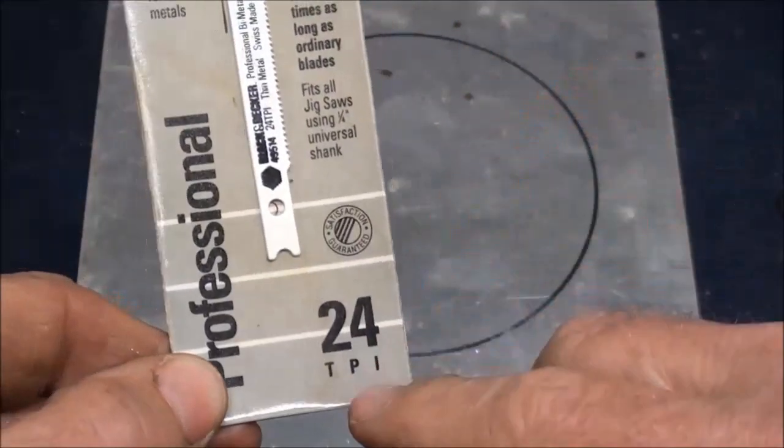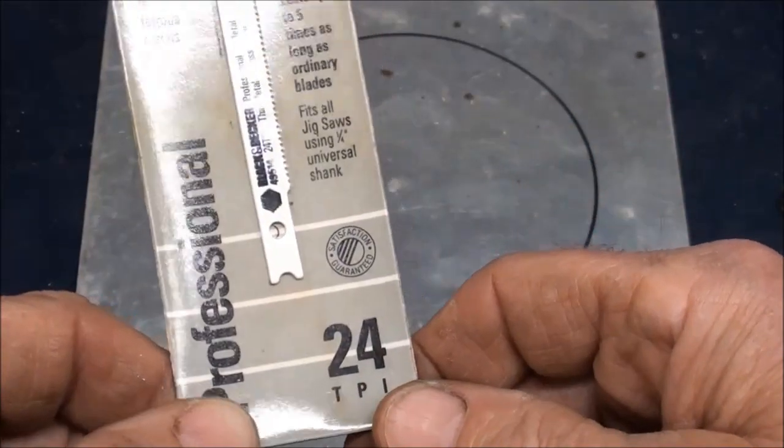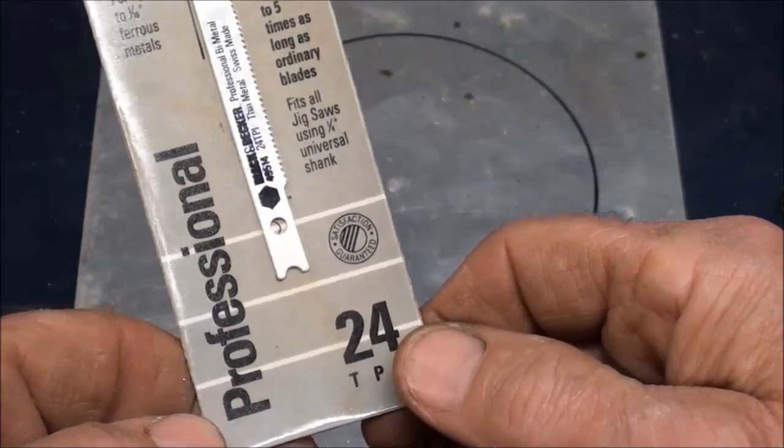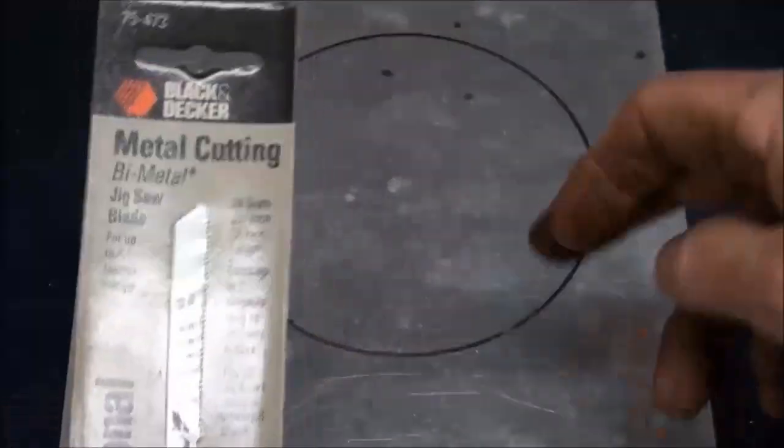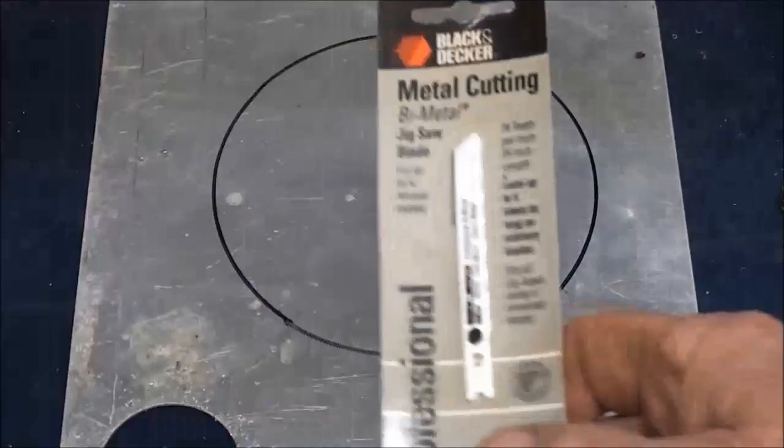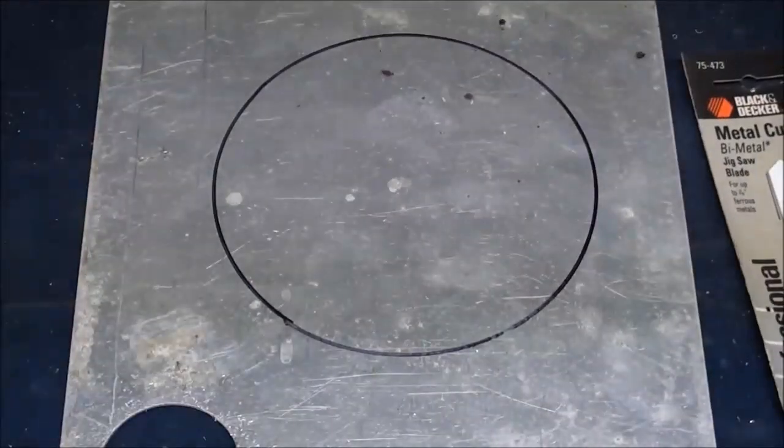A 32 tooth would be even better. The more teeth you have in contact with the work, the better it is, unless it's going to chatter or grab. So, your saber saw would work just fine.